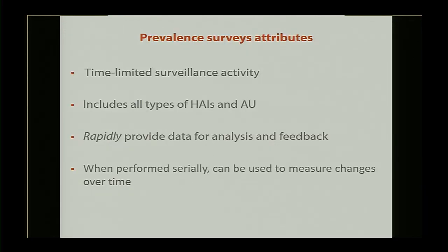Some attributes of using the prevalence survey method: it's a time-limited surveillance activity. There's a planning phase and an implementation phase; all data collection occurs at a given point in time associated with a survey date for that facility. Unlike NHSN surveillance, which is ongoing and requires data collection month to month, this happens one time to get a snapshot and then it's done. This type of survey allows us to look at a variety of different HAI types rather than focusing on a single one — and in this survey we also looked at antimicrobial use.